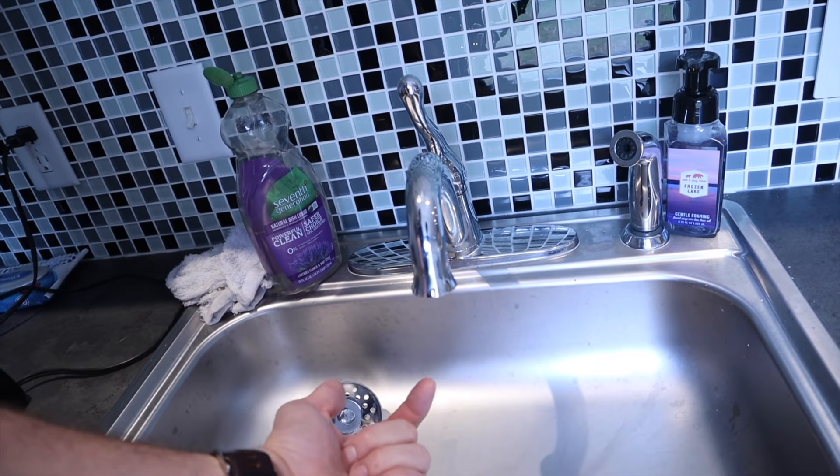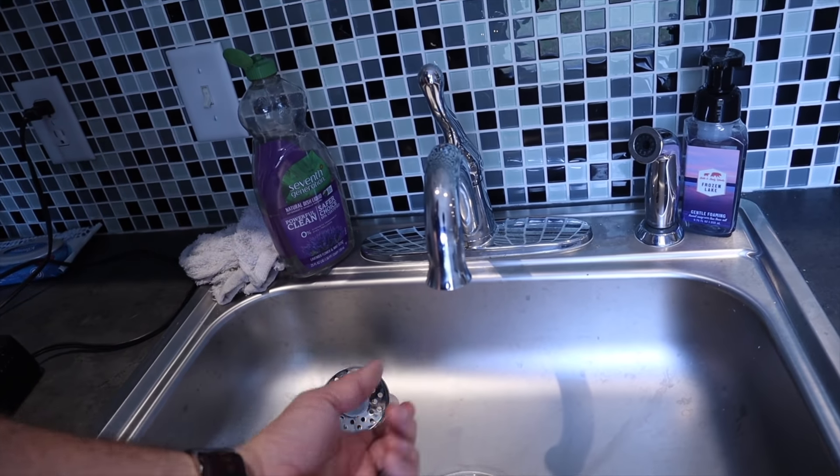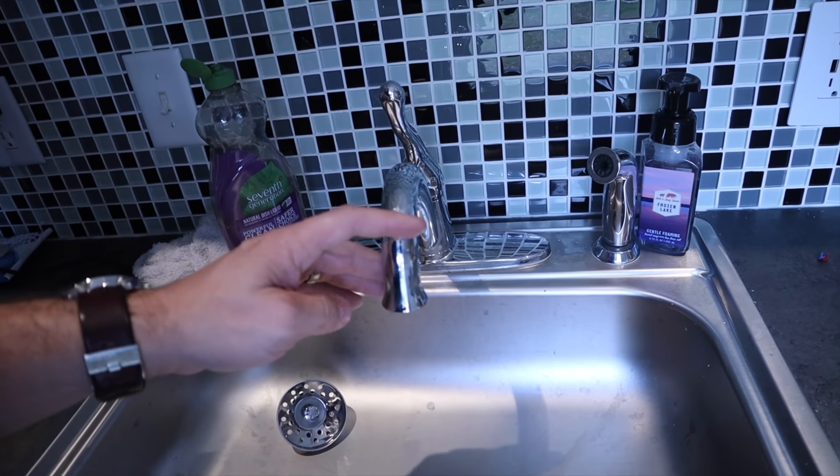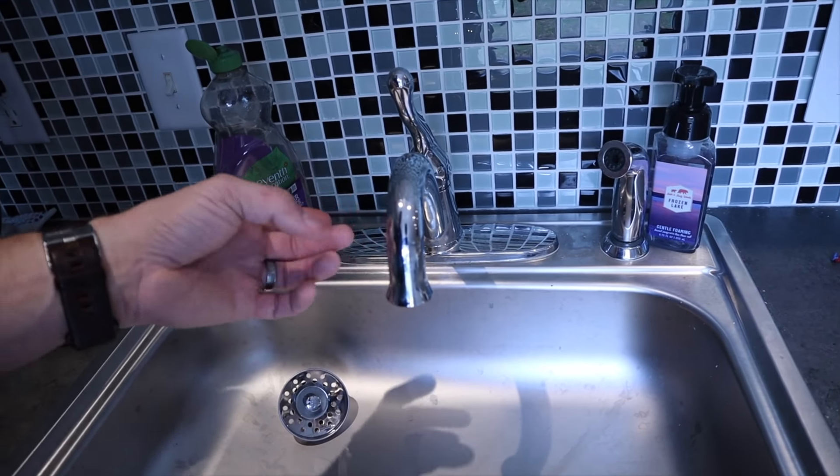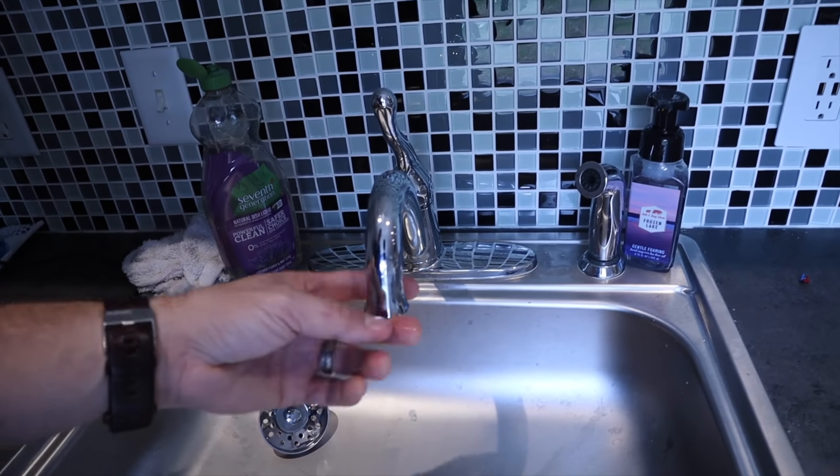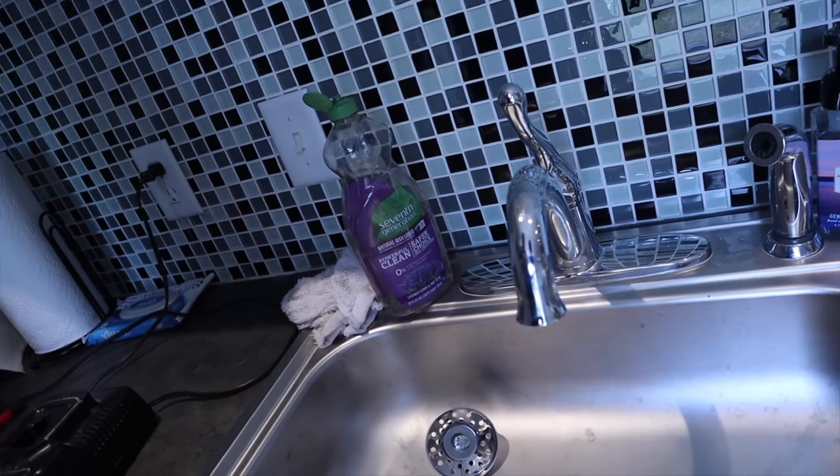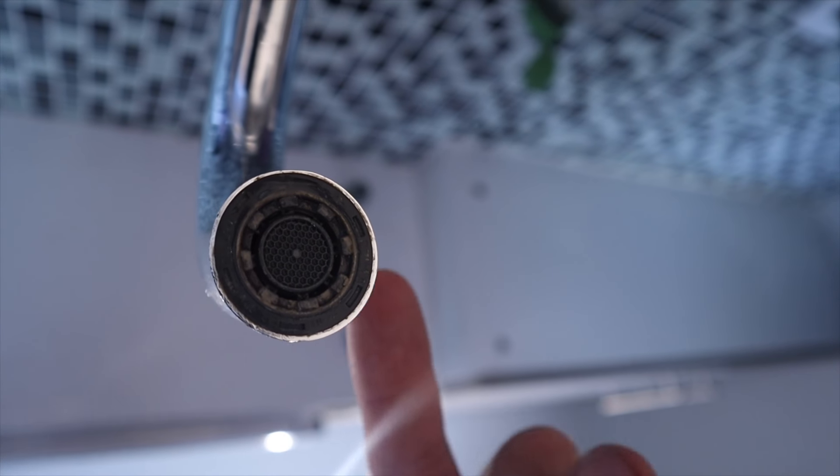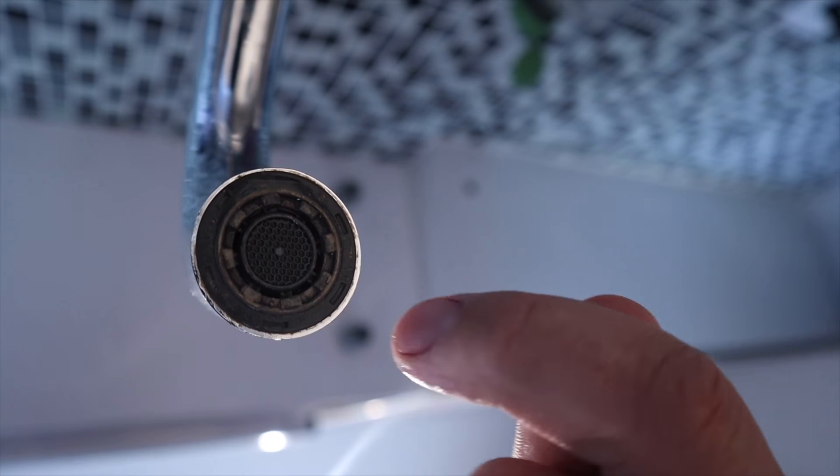Most likely the aerator is clogged with debris. Now the problem is, if you notice on this Delta faucet, there is no aerator visible. I'm going to try to stick you up underneath there so you can see. All right, so you notice that the aerator on this faucet is hidden up underneath.